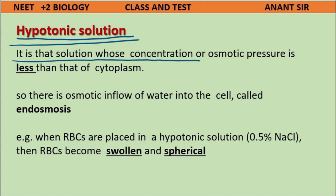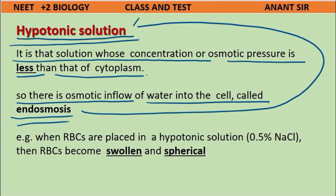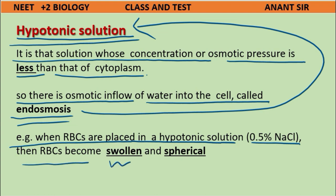A hypotonic solution has a lower concentration or osmotic pressure than the cytoplasm, causing osmotic inflow of water into the cell (endosmosis). When RBCs are placed in hypotonic solution (e.g., 0.5% sodium chloride), they become swollen and spherical.